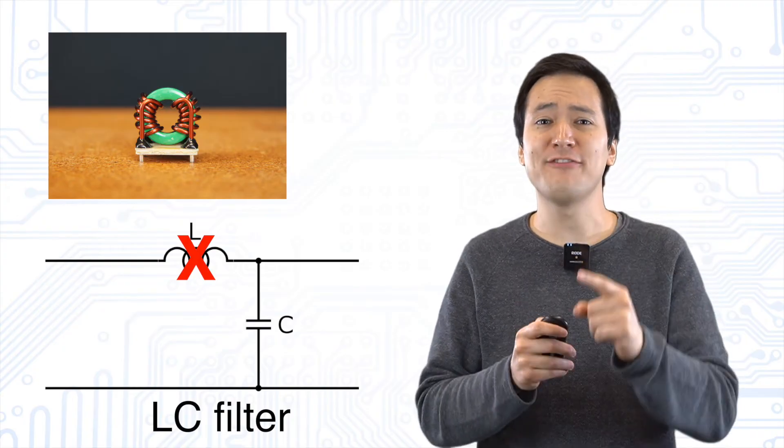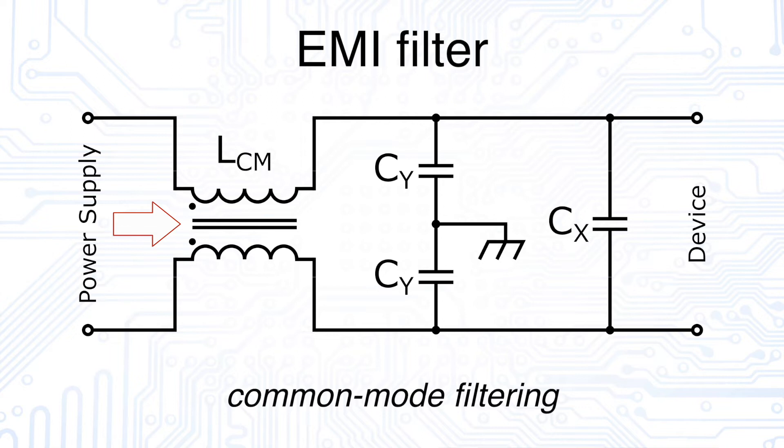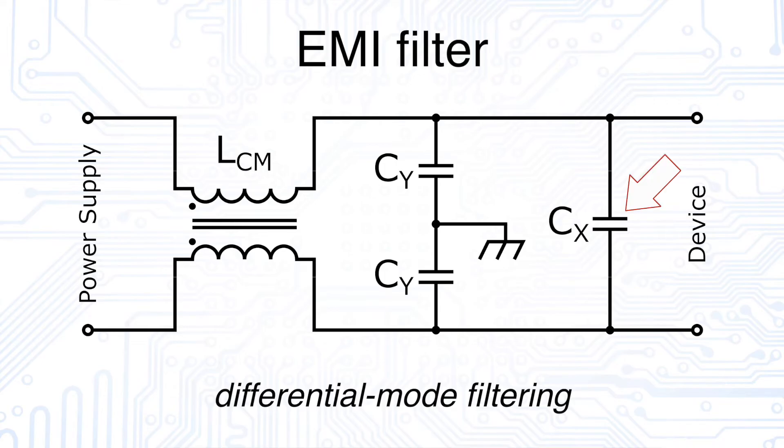Our EMI filter finally may look something like this. Our input signal sees the common mode choke first. This is followed by so called Y capacitors which redirect high frequency currents to ground. These are additional common mode filter components. To suppress differential mode noise we use a single X capacitor and take advantage of the differential mode inductance of our choke.